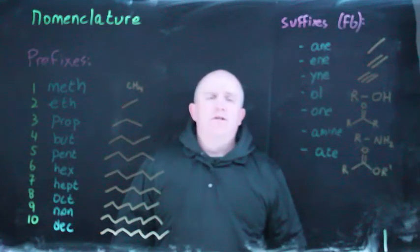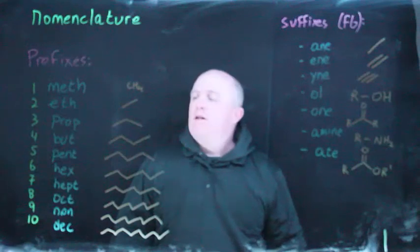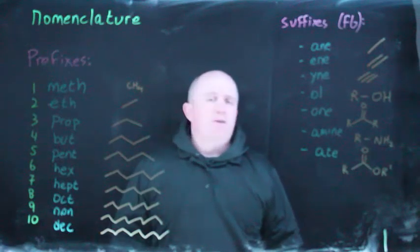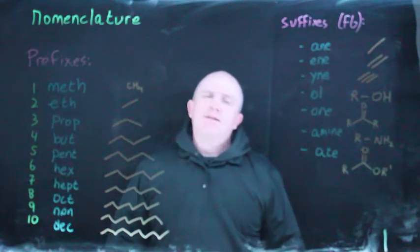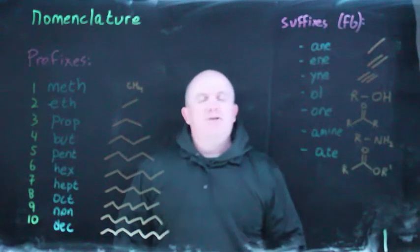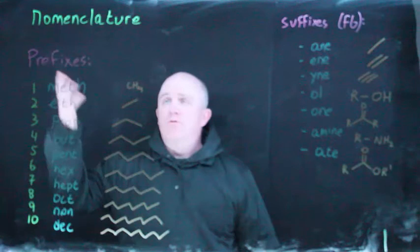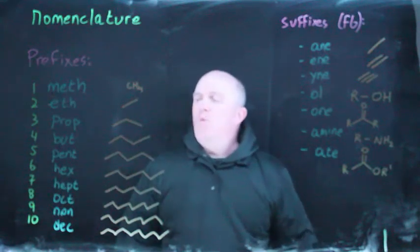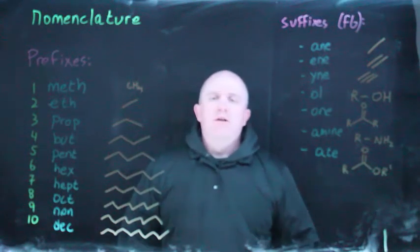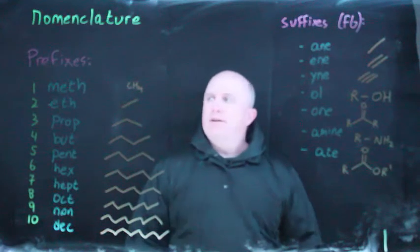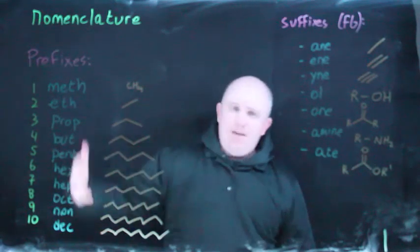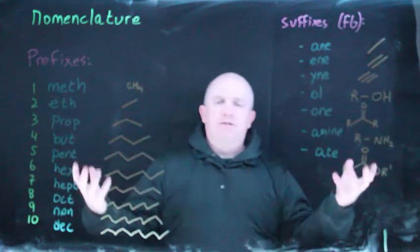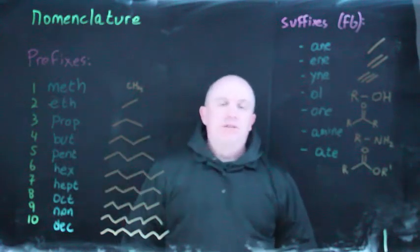Today's subject is nomenclature, and this is an absolutely no-fun subject to cover as an organic chemist because it's something that fundamentally you just need to memorize. To the extent that it's not just about memorization, there's actually an algorithm you can follow. But you first need to start by memorizing the names of the various functional groups, suffixes, and prefixes.